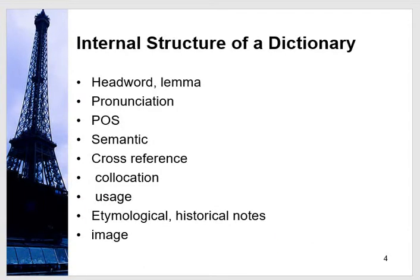What is the internal structure of a dictionary entry? There is a headword — the word which is being searched. Then there are slashes, and within the slashes you find pronunciation using Henry Sweet's IPA keys. The International Phonetic Alphabet has been used in Oxford Advanced Learner's Dictionaries. Then the part of speech is mentioned, because when a word changes its part of speech, its meaning also changes.